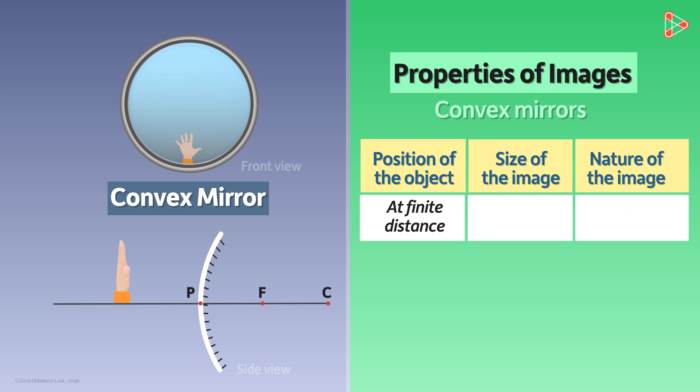First of all, we conclude that the image is smaller in size compared to the object. This is very clear. The image is diminished.